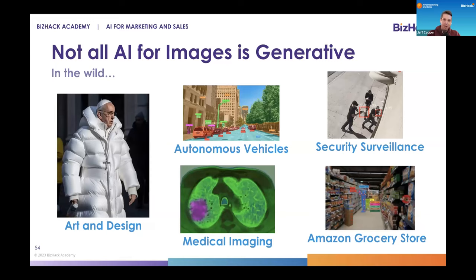Not all AI for images is generative. In this lesson we're talking a lot about using AI to generate unique photography, but in the wild we also use image-focused AI for things like machine vision. If you drive a Tesla or another electric car, autonomous vehicles rely on AI to process imagery. We've made shocking advancements in cancer detection using these tools, as well as security surveillance and Amazon grocery stores where you don't even need to check out because the machine is watching you shop. These are all examples of AI for images in the wild — we'll spend most of our time on generative AI today, but wanted you to be aware of these other scenarios.